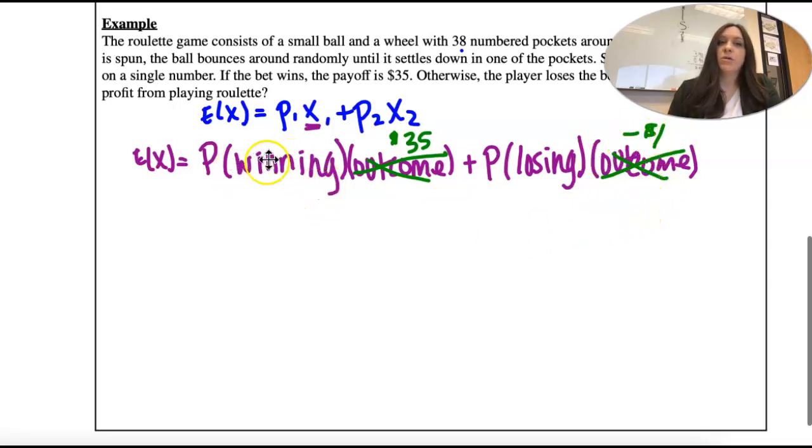And now we're going back to what we did earlier in this quarter. We need to talk about probabilities. So probability of winning. Well, what are the outcomes here? How many spaces are there? There's 38 spaces, so our total outcome is 38. The chance of winning is one number. Okay, the ball will fit in one pocket. So the probability of winning is 1 out of 38.